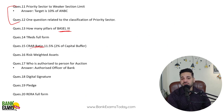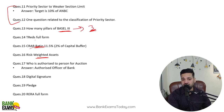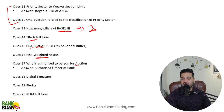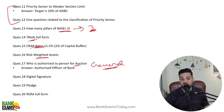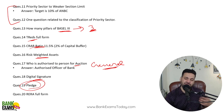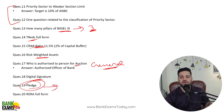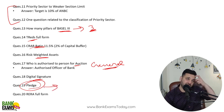Basel 3 norms are really important — three questions were directly from Basel norms. TRADES full form appeared again. Who is the authorized person for the auction? — authorized officer of the bank. This is a general banking question. Digital signature, pledge, hypothecation, different types of mortgages — these are covered in our course. Types of hypothecations, pledges, mortgages, and types of pledge — all of these we have already covered.